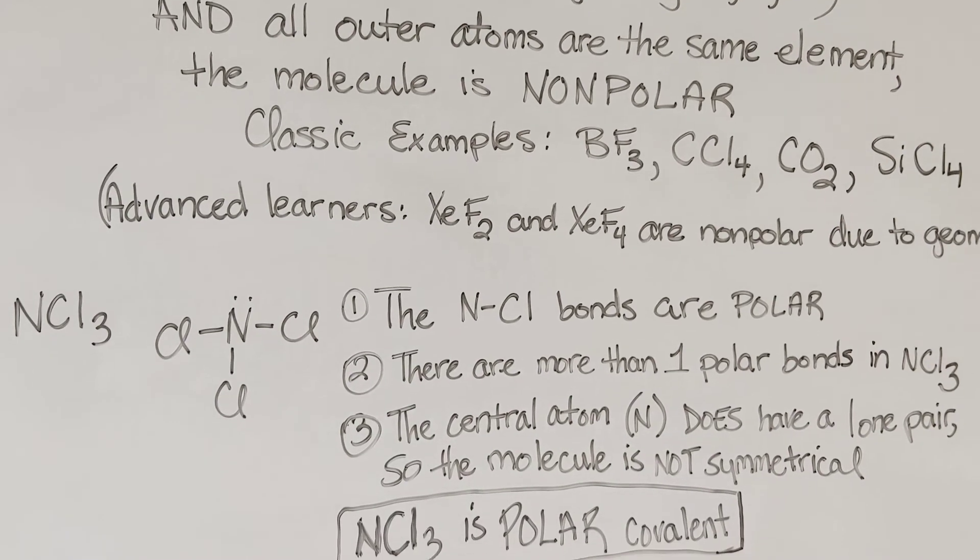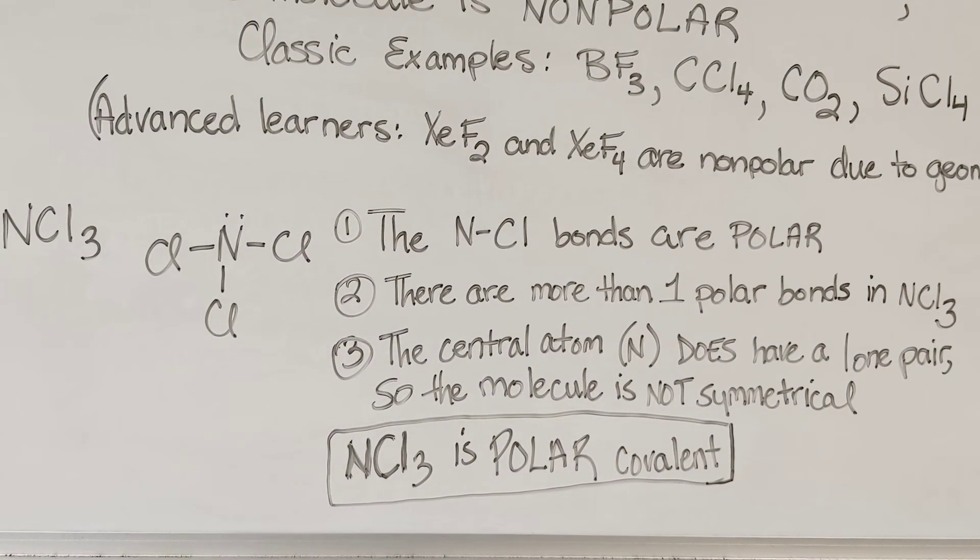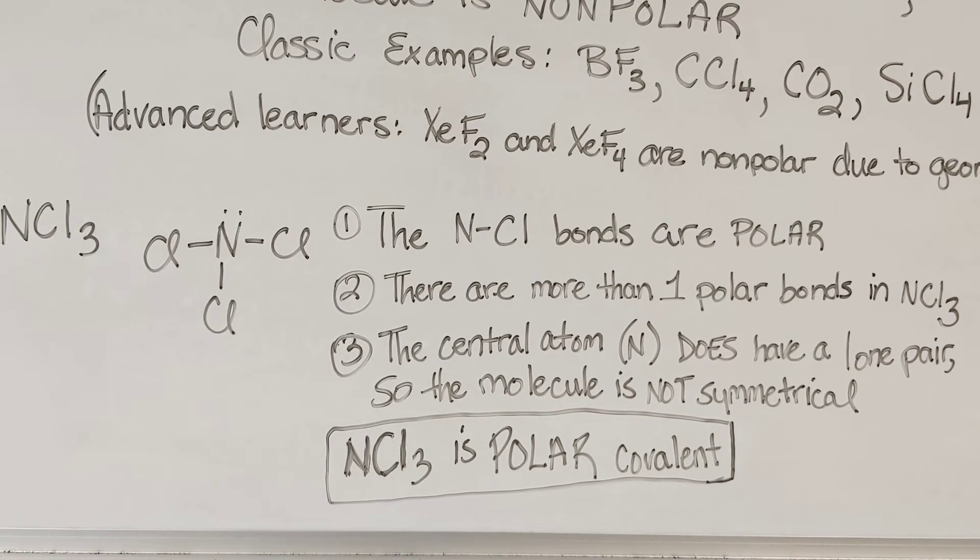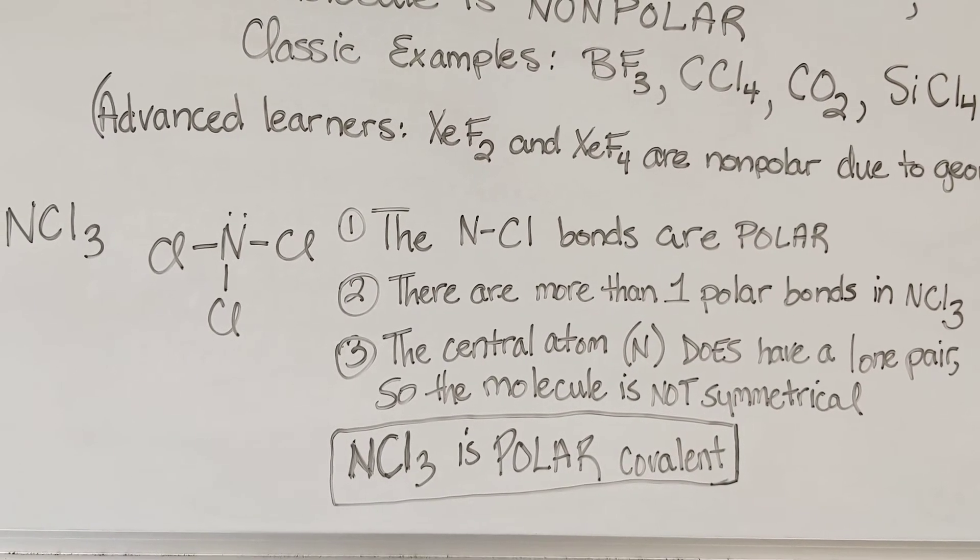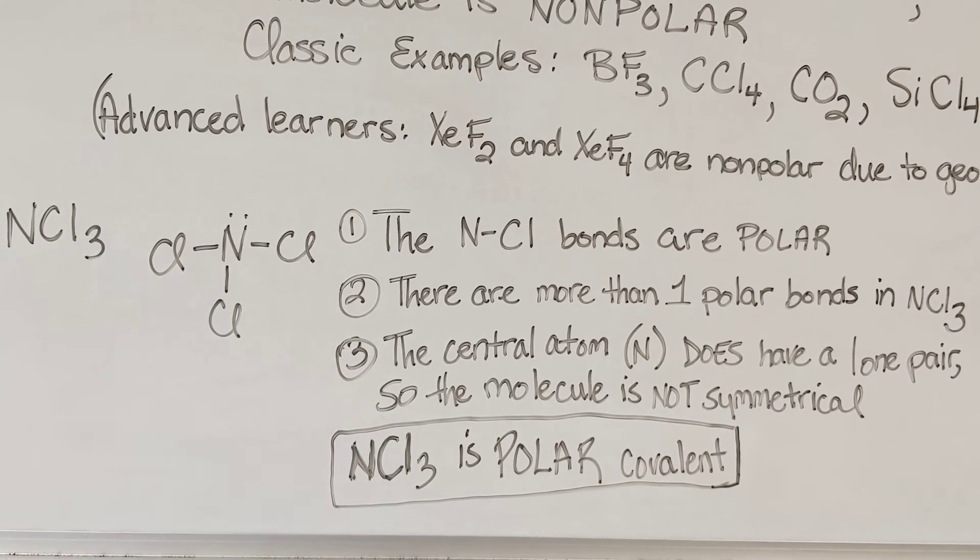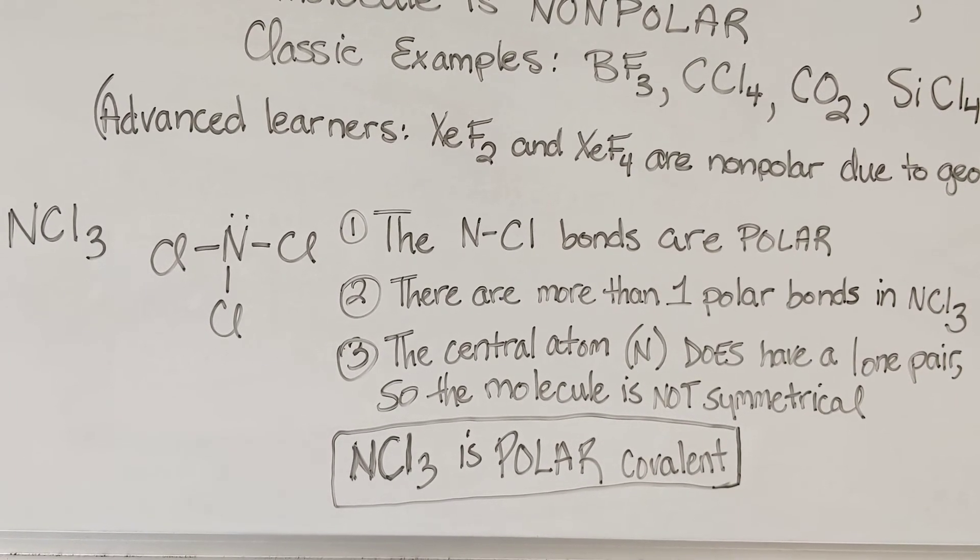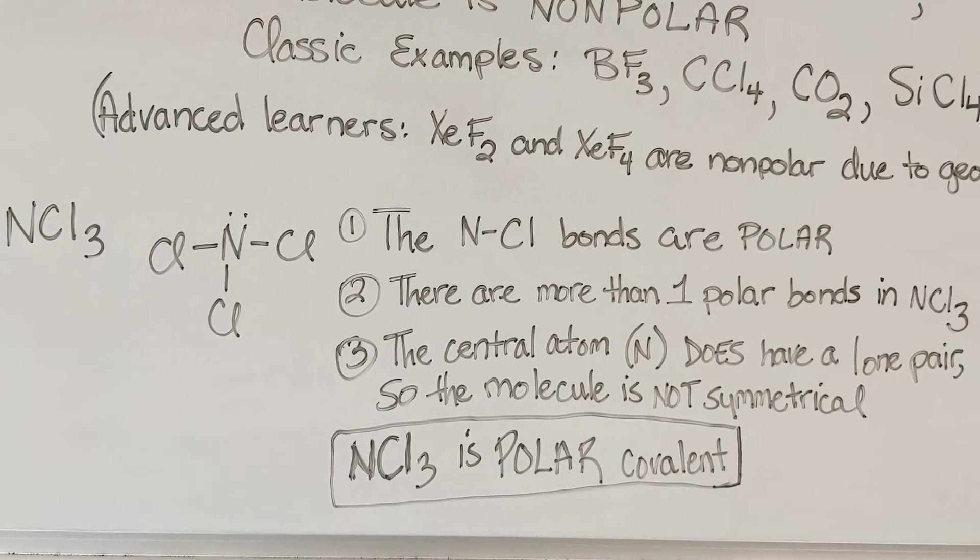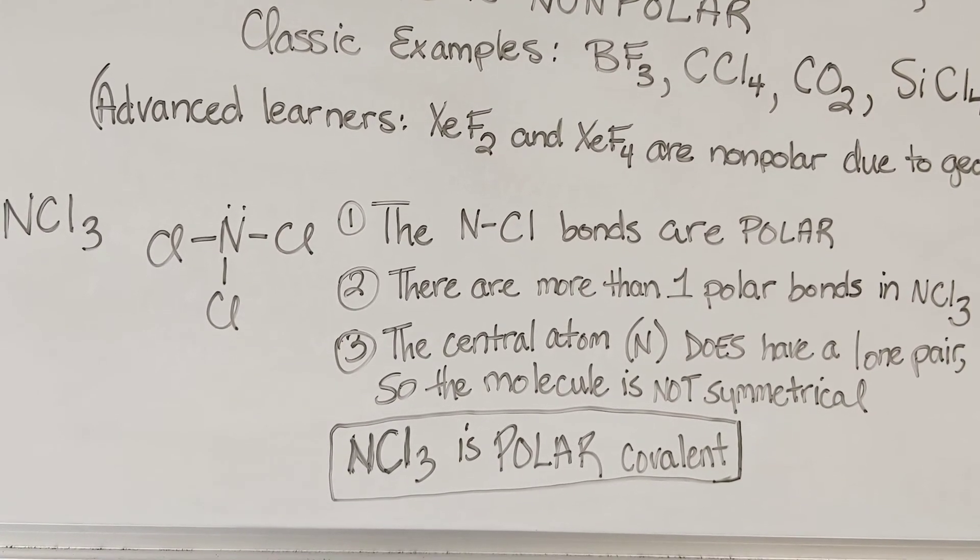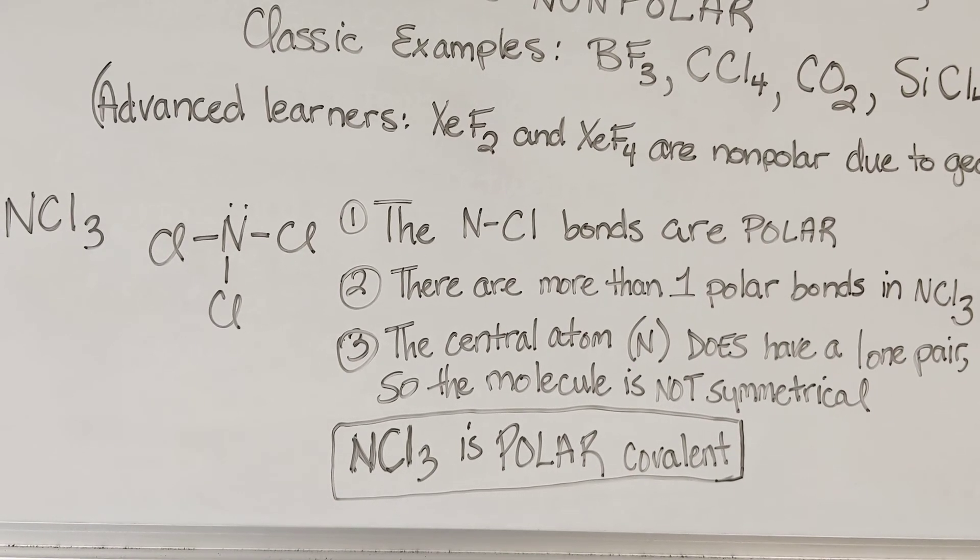The molecule that we drew, ignoring the lone pairs on the chlorine atoms, the central atom nitrogen has a lone pair of electrons on it, and we have three bonds between the nitrogen and chlorine atoms. Those are polar bonds because they are not between identical atoms. N and Cl are different elements, and it's not between carbon and hydrogen.